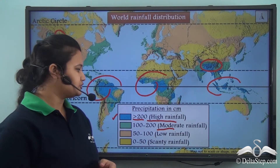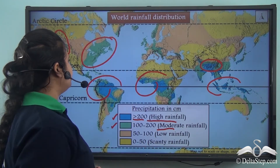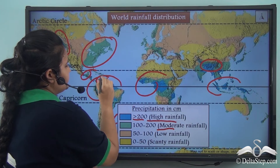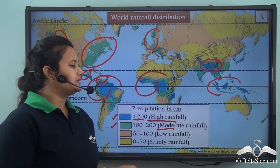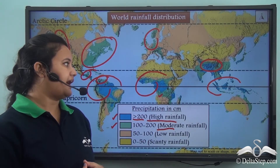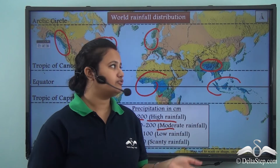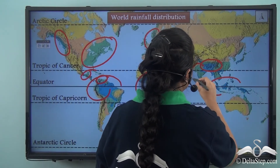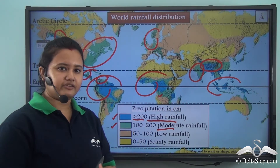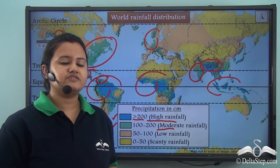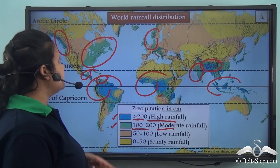Regions that receive moderate rainfall are marked in green on the world map. These include the eastern side of North America, the northernmost part of South America, some parts of Europe and Africa close to the high-rainfall region, and a substantial part of the Indian subcontinent. These regions receive an annual rainfall of 100 to 200 cm.